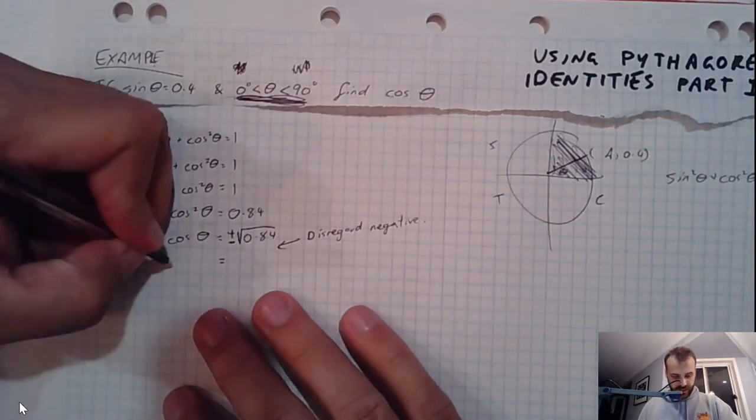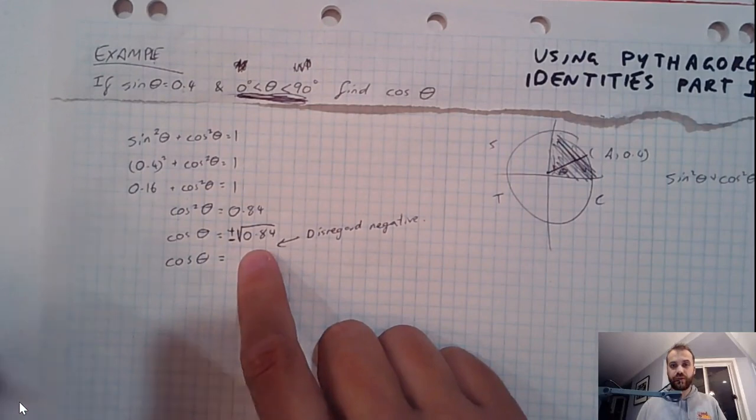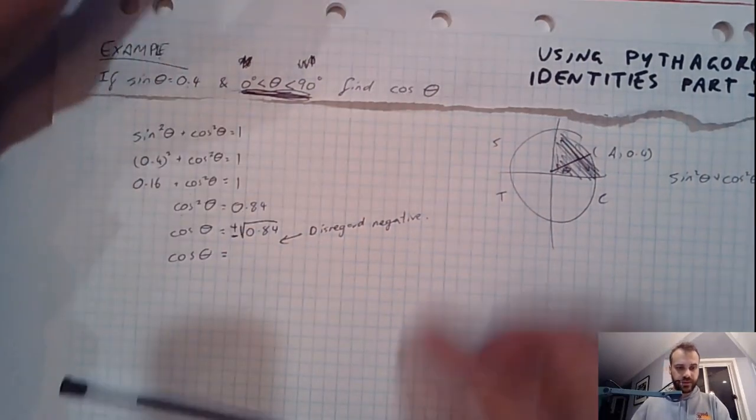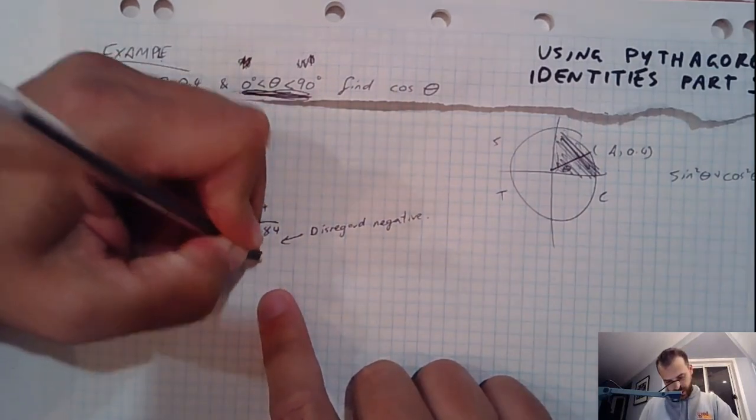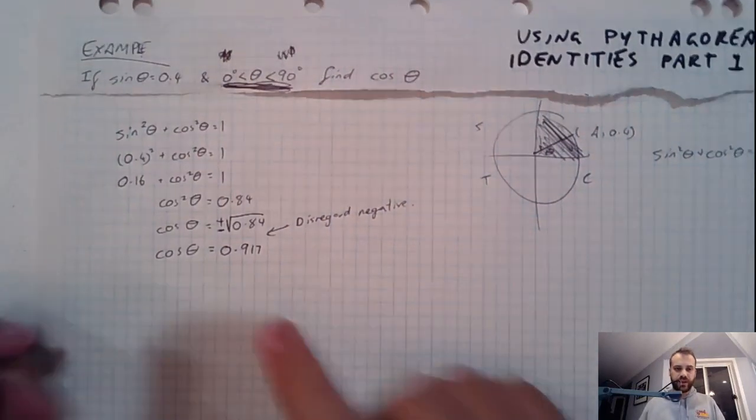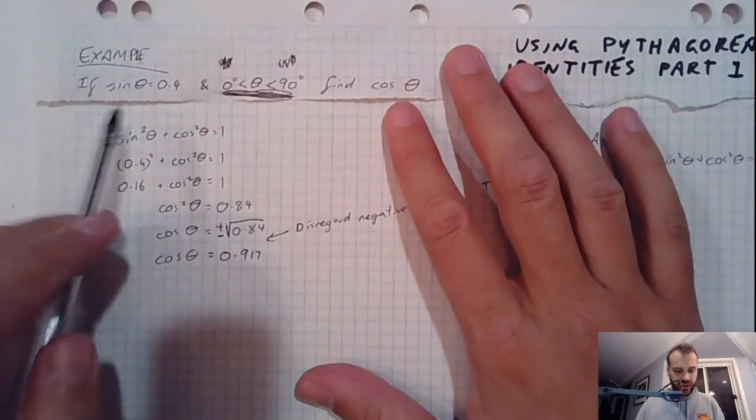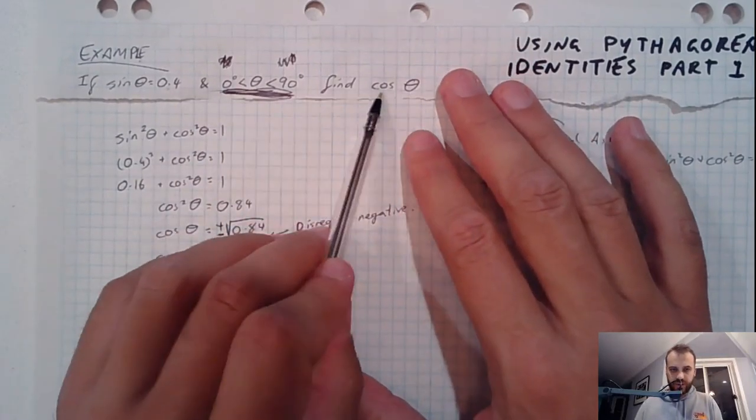Now we can just use our positive answer, cos theta equals whatever the square root of 0.84 is. So it looks like it's about 0.917. Okay, so that's using the Pythagorean identity. If you know one of them, sin theta equals 0.4, you can find the other one, cos theta.